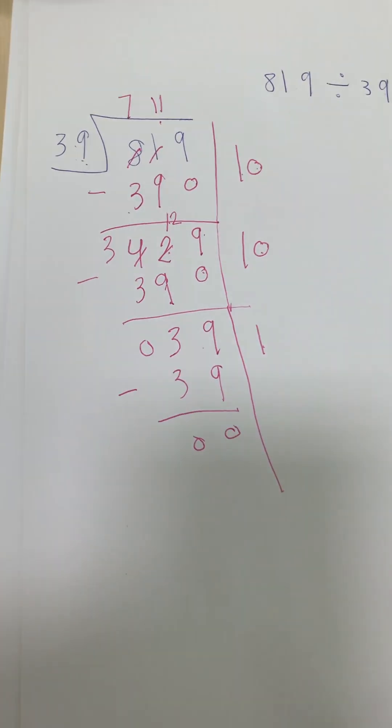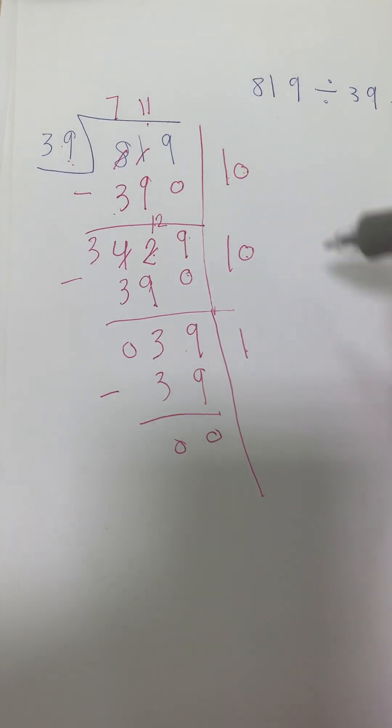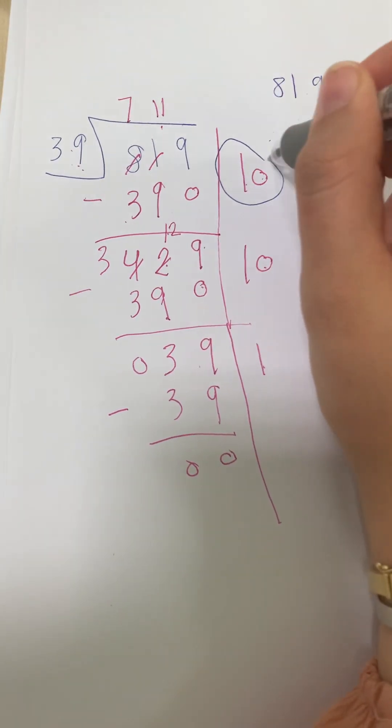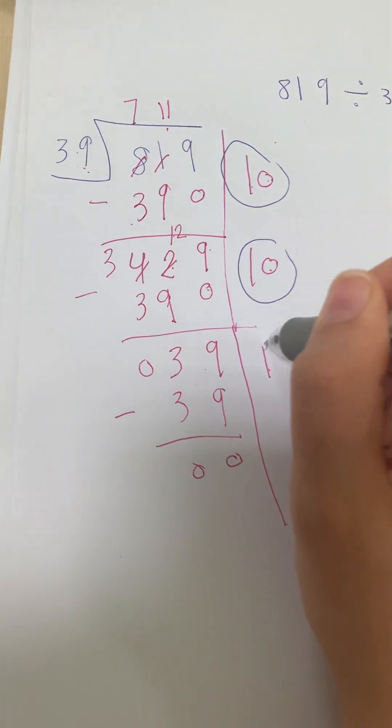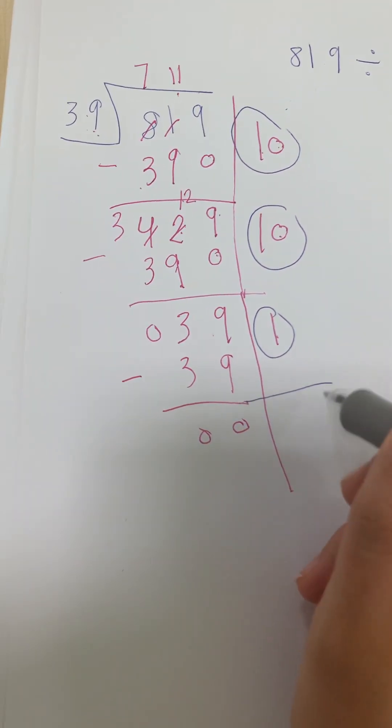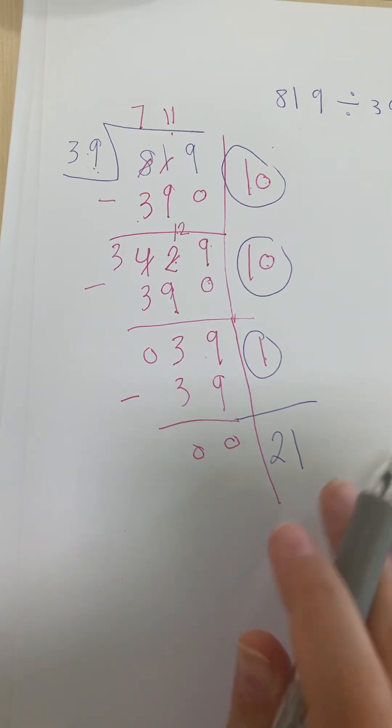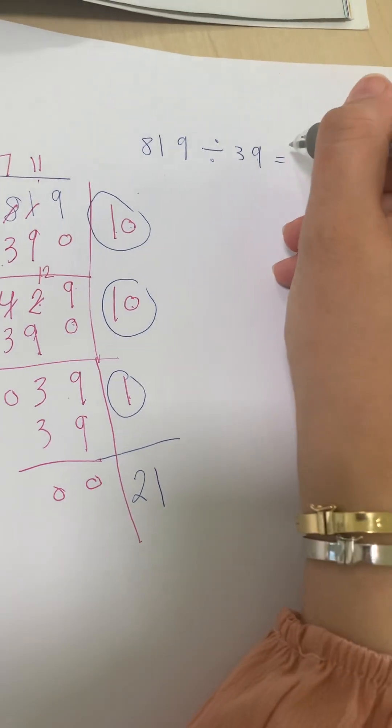Now, where is the answer? You add this column: 10 plus 10 plus 1 equals what? 21. So the answer equals 21.